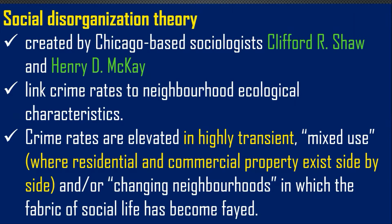Shaw and McKay were concerned with urbanization during their time — the 1930s, when America started to urbanize heavily. They said that there is deterioration of ecological characteristics and that crime rates are elevated in highly transient areas. When we say highly transient, the residents keep changing. For example, in Cavite or Manila, the population is highly transient — people are just working there temporarily and do not stay permanently.